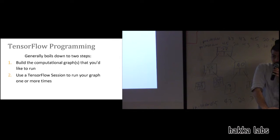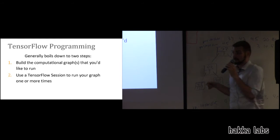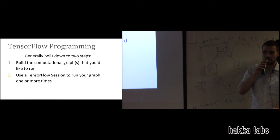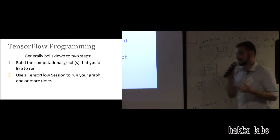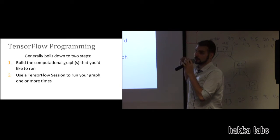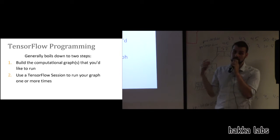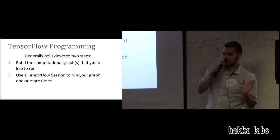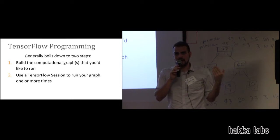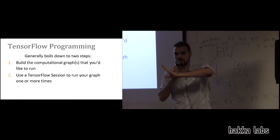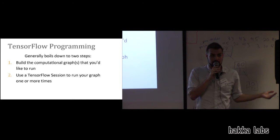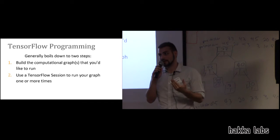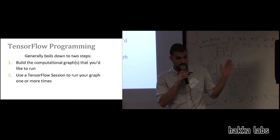TensorFlow programming boils down to two steps. The first step is to build the graph that you want to run — you define all the different steps and nodes without running it yet. Then you use a TensorFlow session to run it as many times as you want. For machine learning, you build your model for prediction, analyze the error, do some gradient descent, and for a neural network you backpropagate. You then run it multiple times, each run corresponding to a single training batch.